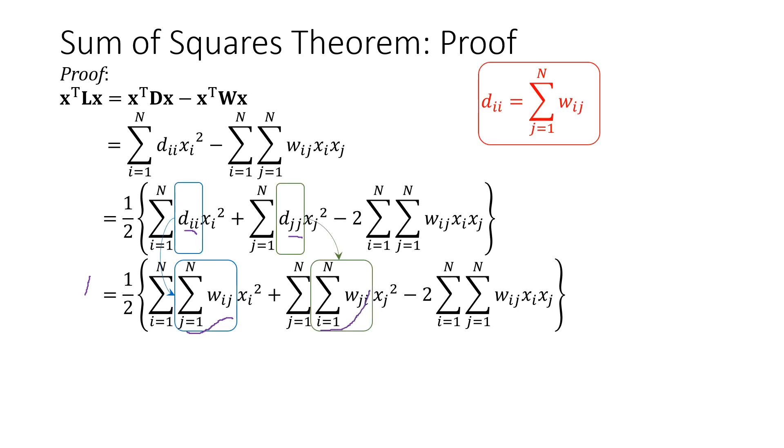And that's because by definition, the degree matrix dii is equal to summation j wij. So this dii is replaced with summation wij. And likewise, djj gets replaced with summation wji.